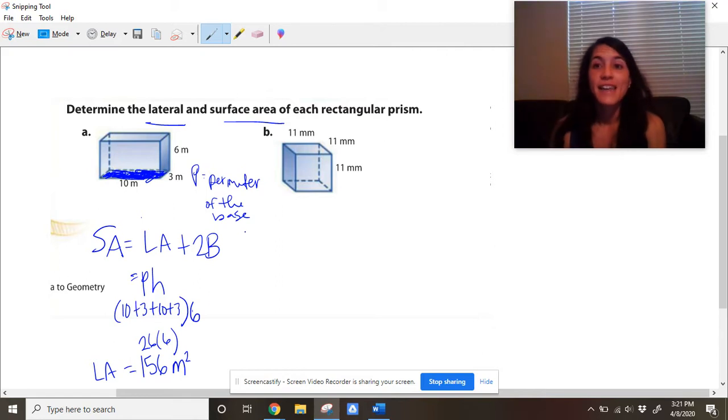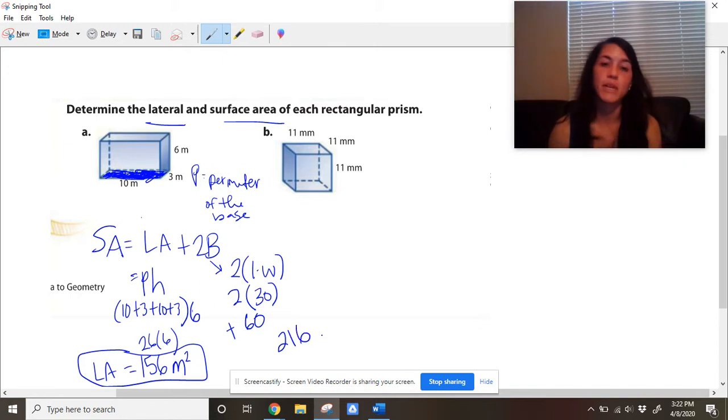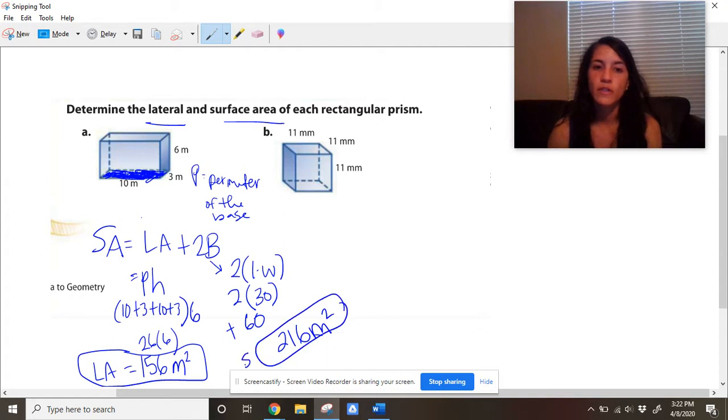156 is the lateral area. Now to find the total surface area, I need the lateral area, which I've already found, and I need to add the two bases to it. So the two bases are the top and the bottom. So 2B means 2 times area of the base, which is length times width in our case, and length and width of the base, 10 and 3. I'm not using 6 because it's not on the base. I'm just using 10 and 3. So that would be 30. 2 times 30 is 60. So that 60 represents the two bases, 30 on the bottom, 30 on the top. And I need to add it to 156. So I would get 216 meters squared is the total surface area.